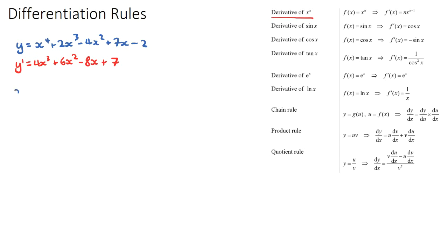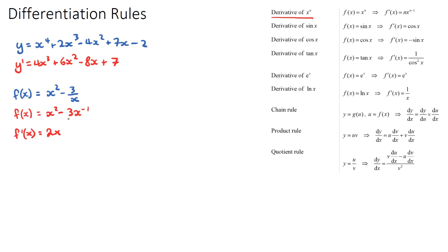For our second example, if we have f(x) = x squared minus 3 over x, this looks trickier but it's still the power rule. I can rewrite the function as x squared minus 3x to the negative 1 using index laws. Deriving gives 2x, and the negative 1 comes down to multiply by negative 3 to become positive 3x to the negative 2. Simplified, the answer is 2x plus 3 over x squared.